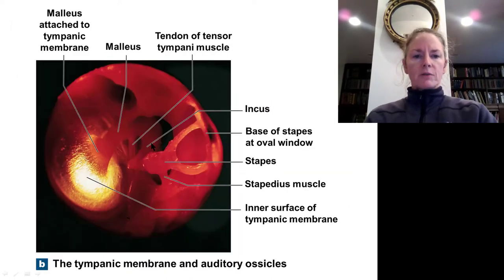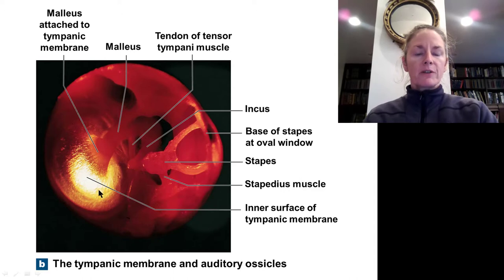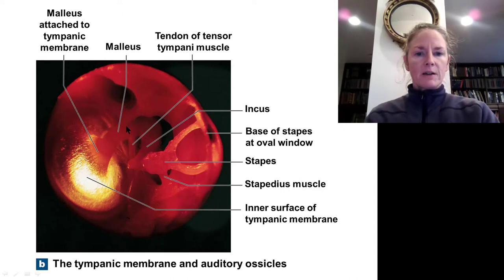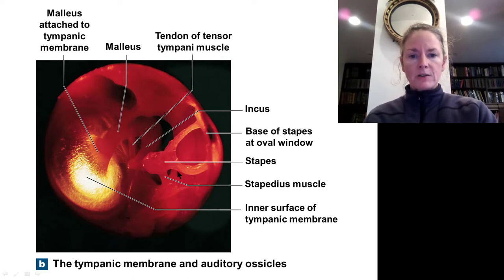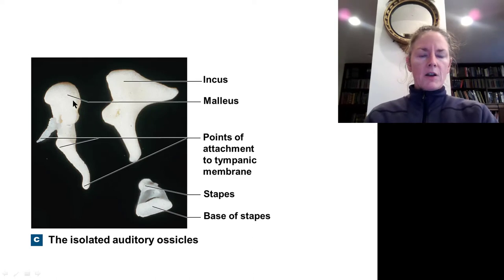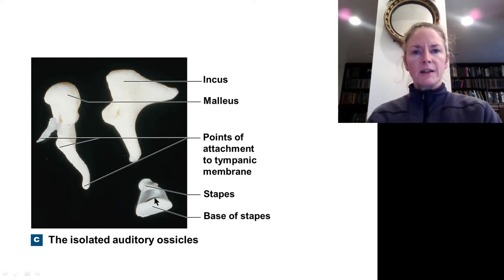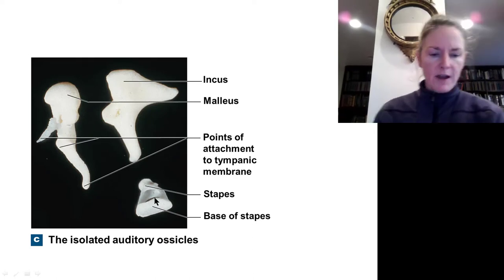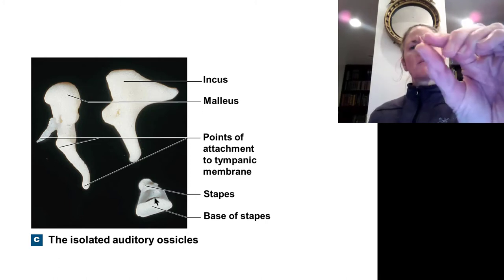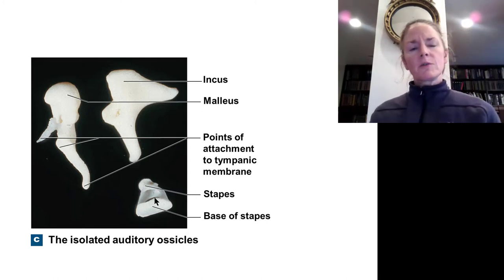Here is what the ossicles look like in real life. Looking from the inside, we can see the tympanic membrane, the malleus, the incus, and the stapes — which is actually stirrup-shaped. The malleus, incus, and stapes — we actually had some of these in the lab, and human ones are about this big, so they're tiny.